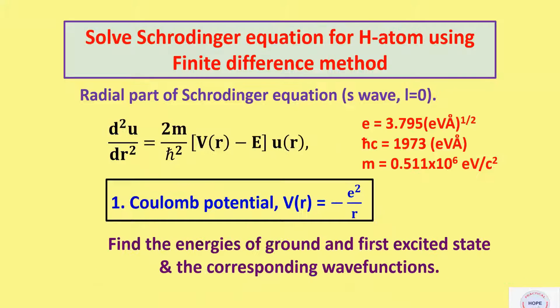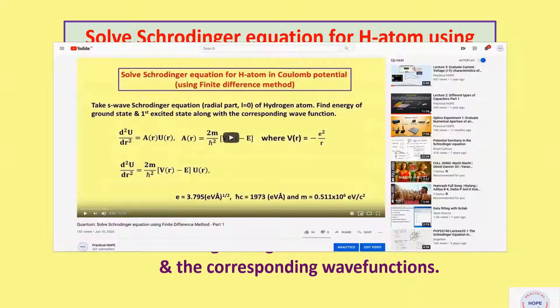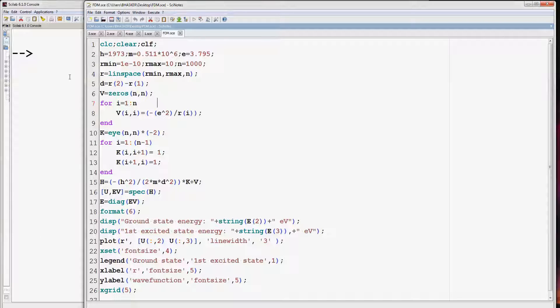First is the Coulomb potential. Before continuing further, I suggest you watch my previous video on how to solve Schrodinger equation using finite difference method part 1. The present video is a sequel to that. The basics of finite difference method and its implementation for Coulomb potential has been explained in detail in that video. The link has been provided in the description box. So now we will continue from where we left in the previous video.